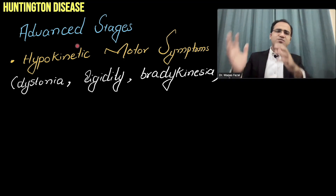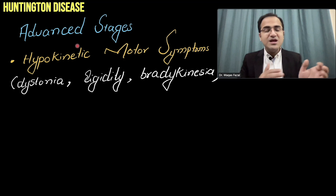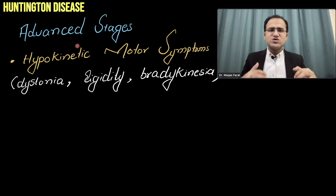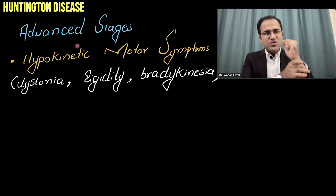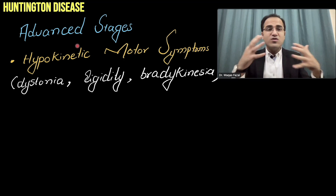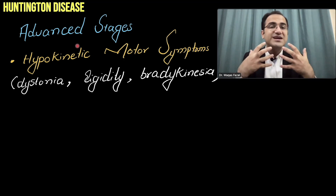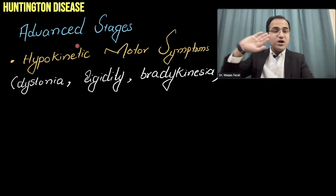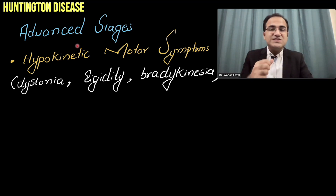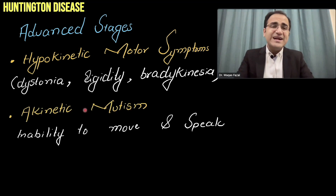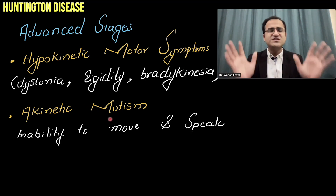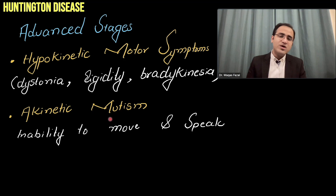Initially patients have increased chorea, but as the disease progresses, movement slows and they develop rigidity, dystonia, and bradykinesia — hypokinetic motor symptoms. In end stages, patients can develop akinetic mutism, in which they are unable to move or speak, simply lying still.